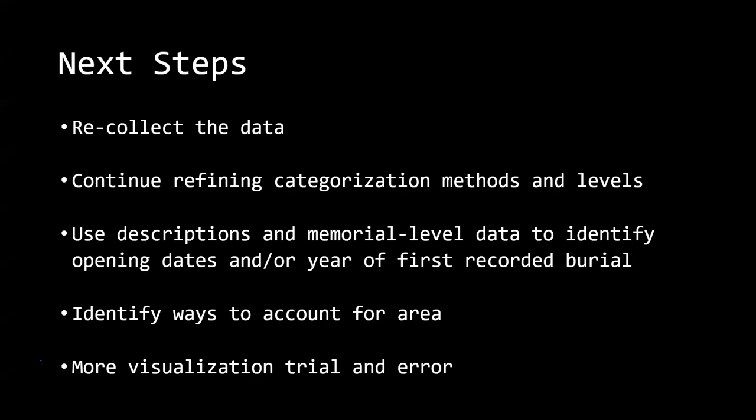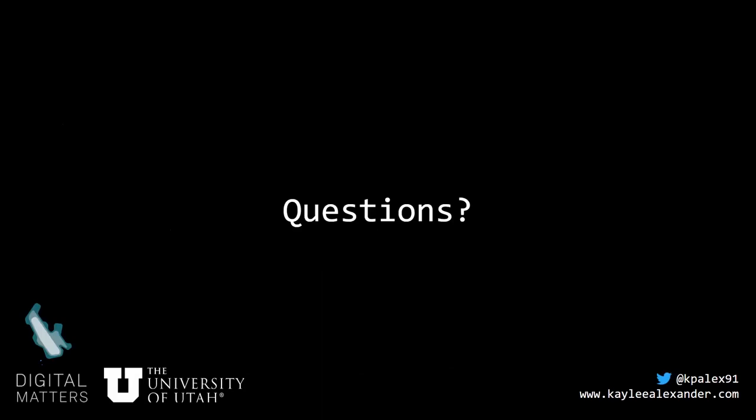Next, I'll use descriptions to find the first reported burial. I'm also going to welcome suggestions on finding ways to account for area — one GIS data layer found had almost half the cemeteries I had and didn't include area. I want to account for area so we can look at number of individuals buried per square meter and ask whether certain cemeteries are more crowded than others. More visualization trial and error, and Python trial and error as well. I'll open it up for questions and suggestions now — I know that was fast and not a lot of information, but hopefully it sparked something.